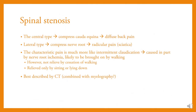Spinal stenosis: the central type compresses the cauda equina, causing diffuse back pain. The lateral type compresses nerve roots, causing radicular pain. The characteristic pain resembles intermittent claudication, caused in part by nerve root ischemia, likely brought on by walking. It is best described by CT.